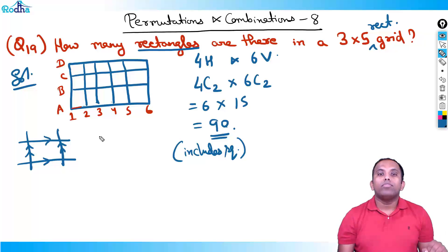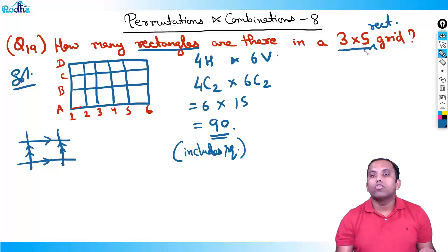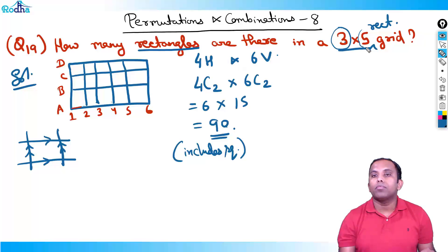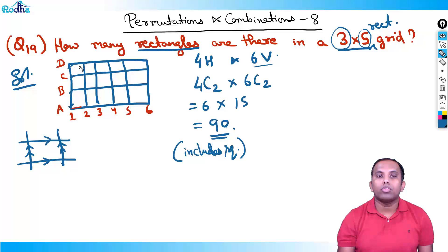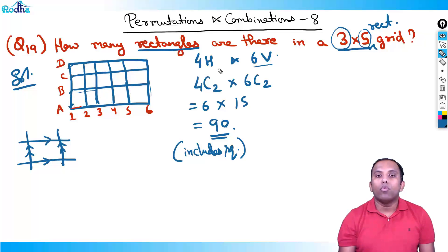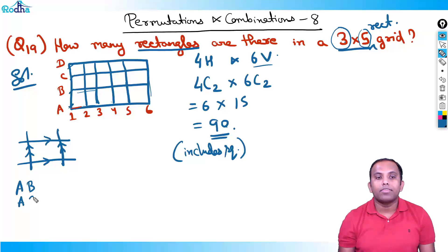The key formula is: for an A×B grid, draw A+1 horizontal lines and B+1 vertical lines. So for a 3×5 grid, we get 4 horizontal lines and 6 vertical lines. 4C2 means selecting groups of 2 from lines A, B, C, D — like (A,B), (A,C), (A,D), etc.